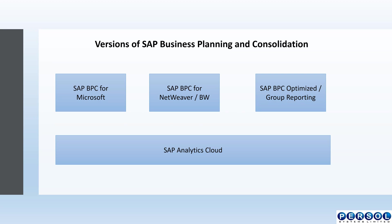SAP Business Planning and Consolidation has three main versions. The first is SAP Business Planning and Consolidation for Microsoft, which serves as a standalone and can be integrated with other non-SAP systems. The second is SAP Business Planning and Consolidation for NetWeaver or Business Warehouse, which comes with standard and embedded options.